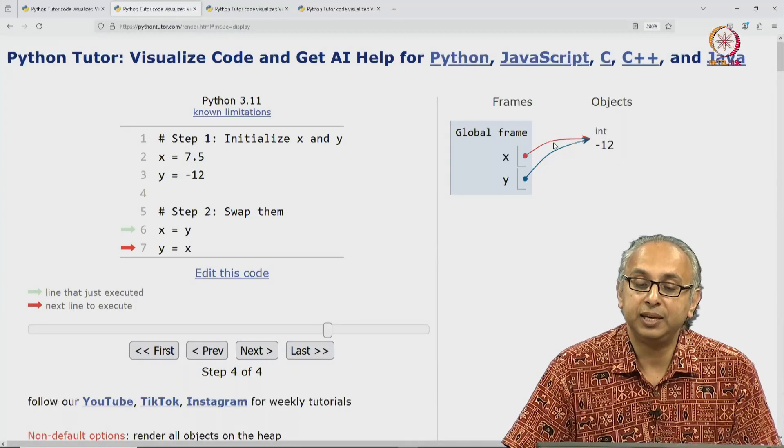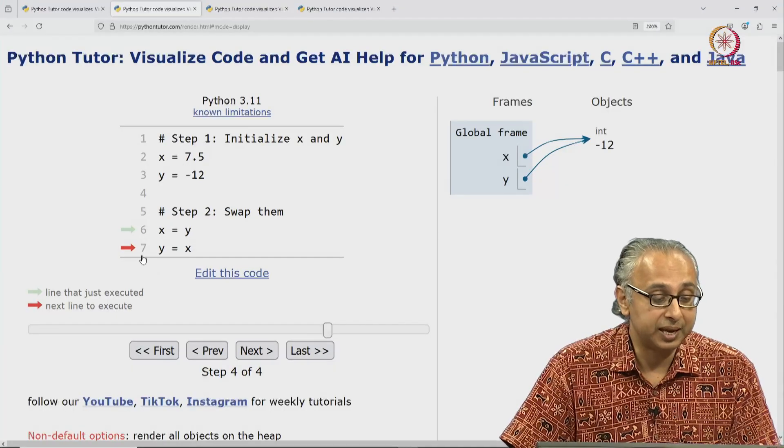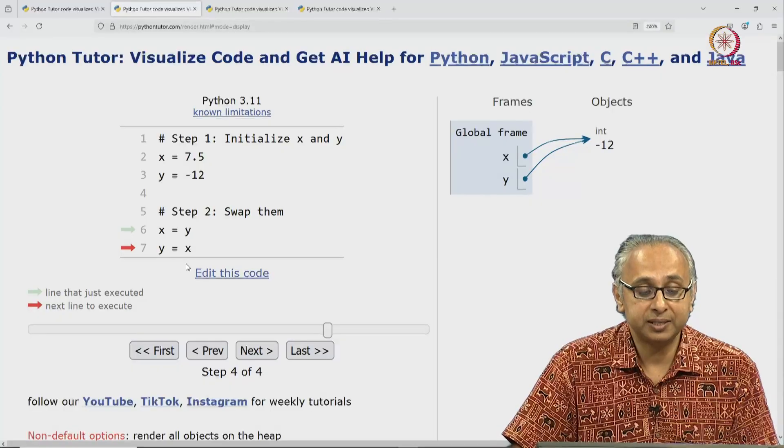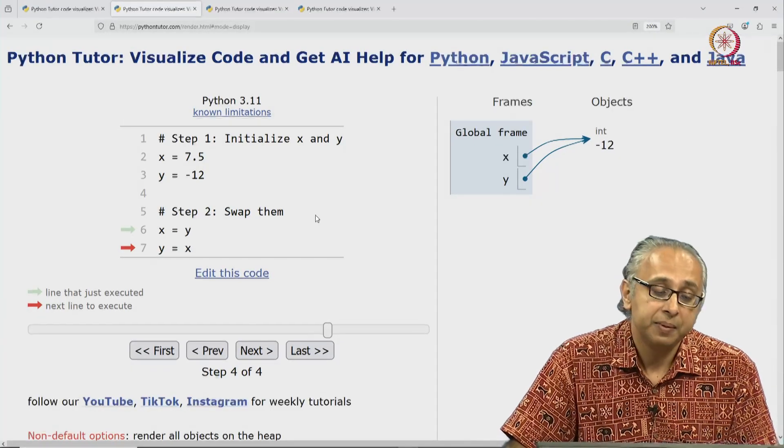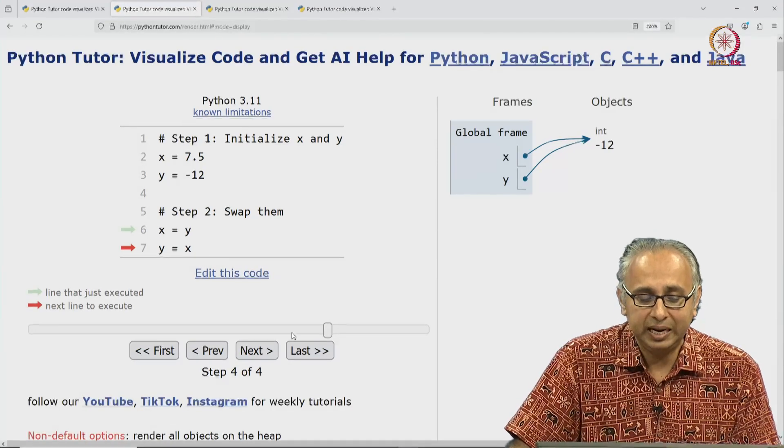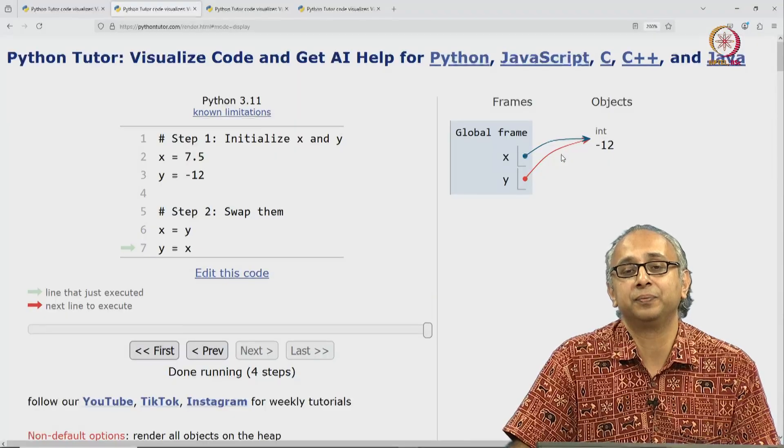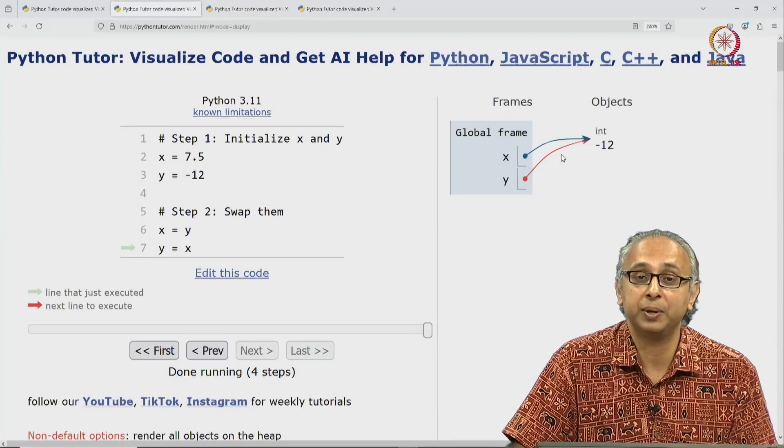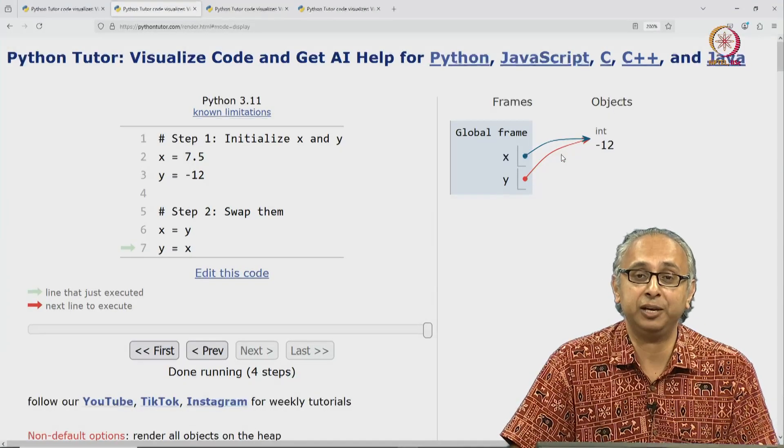For now, you can see that we have lost the float. And so now, this last statement is actually going to have no effect at all. What is the meaning of Y is equal to X? Evaluate the object that X refers to, that's this integer object and move the label Y to that object. Well, Y is already labeling that object. So clicking on next is going to have no effect. And this does not achieve the swap. In fact, we have lost information. We no longer have access to the floating point value.